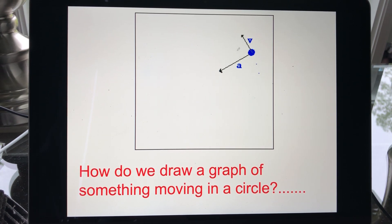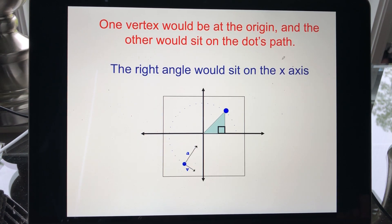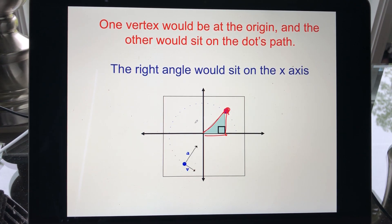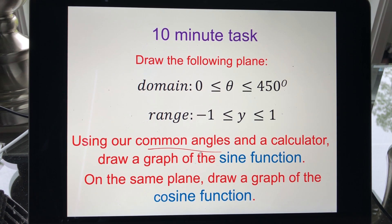How do we draw something moving in a circle on a graph? We can't just draw a circle a million times, so we need a better approach — drawing a right triangle within the circle and tracking that upper corner. Here's a task: pause the video and take ten minutes. Draw a graph with domain from 0 to 450 degrees and range from −1 to +1, using common angles and your calculator to draw the sine function.